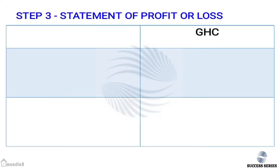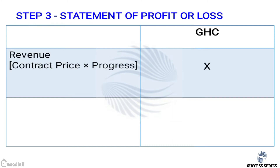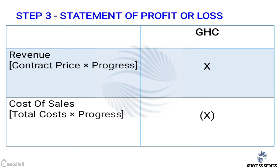Step three is preparation of the statement of profit or loss. Revenue is ascertained as contract price multiplied by the progress calculated in step two. Cost of sales is ascertained as total cost multiplied by progress, where total cost equals cost to date plus cost to complete. This will give us either our profit or loss.